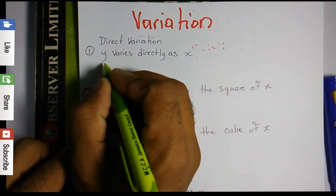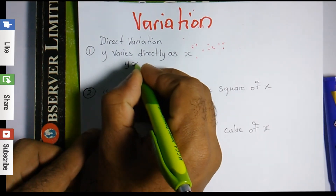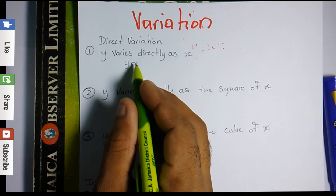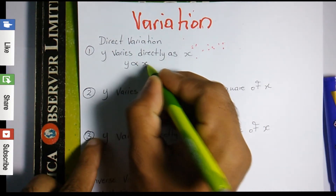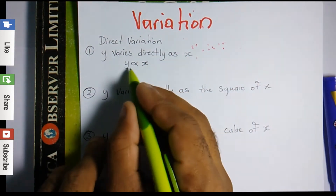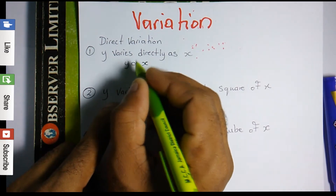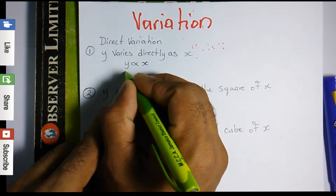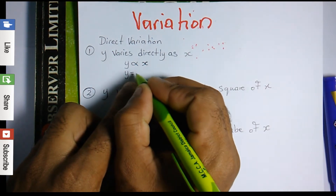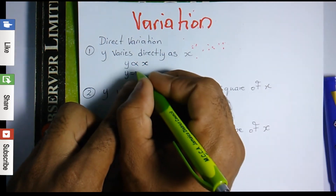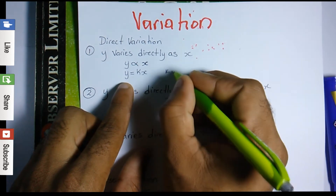So the first one: 'y varies directly as x.' We write this using the variation symbol — y varies directly as x. Now we need to change this into an equation, meaning we change the variation sign into an equal sign. Whenever we do that, we need to introduce a constant, so we write y equals kx, where k represents our constant.